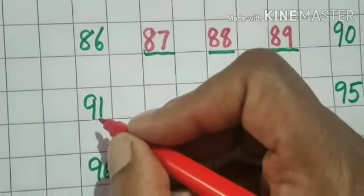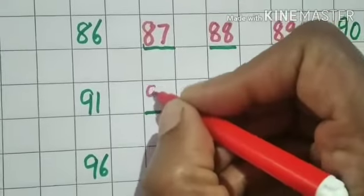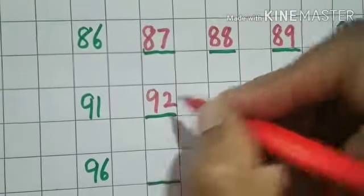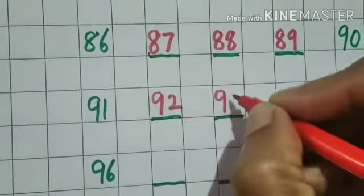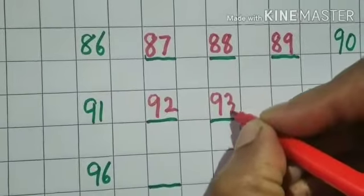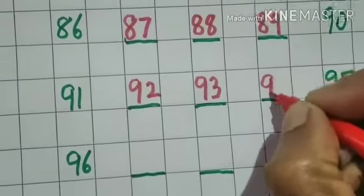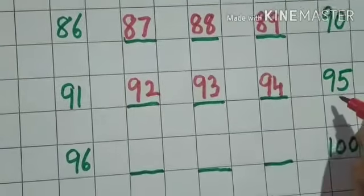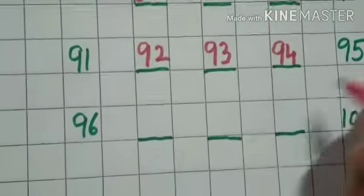After 91, what will come, children? 92, 93, 94, and then comes 95.